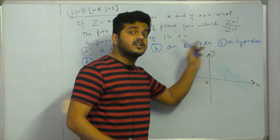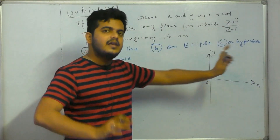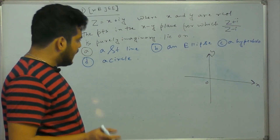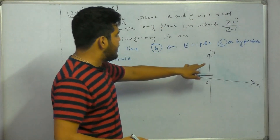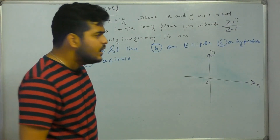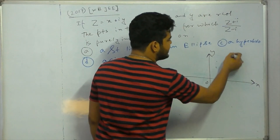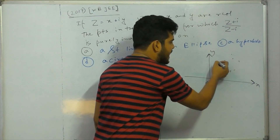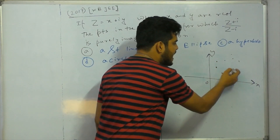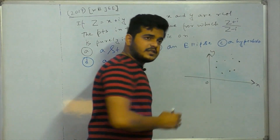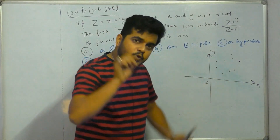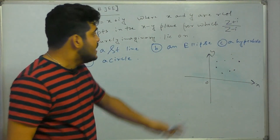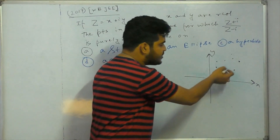The x-axis corresponds to the real axis, and the y-axis corresponds to the imaginary axis in the complex xy plane. But the xy plane is a real plane. If you check the point M1 on this xy-plane, this point — here is complex.